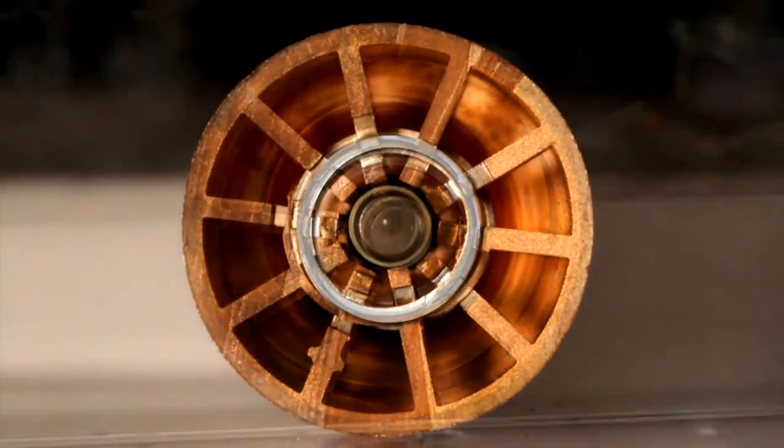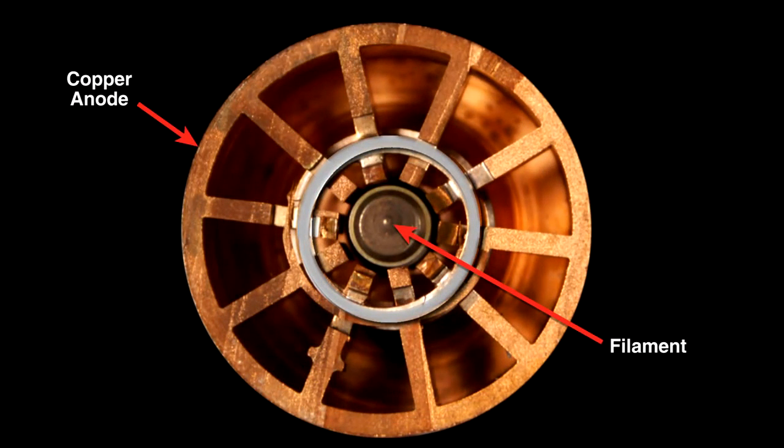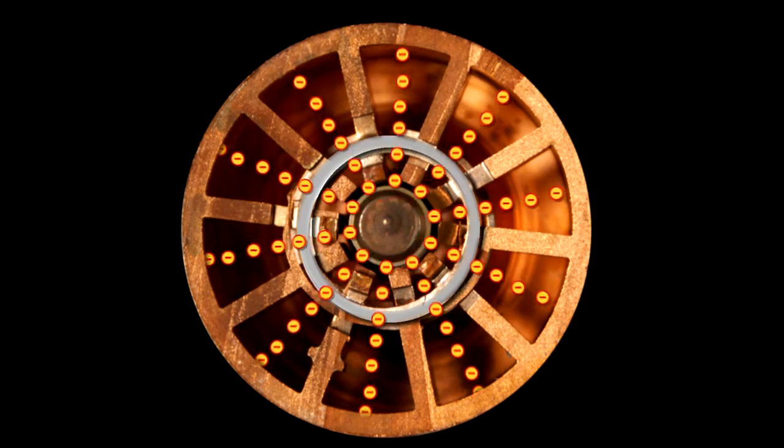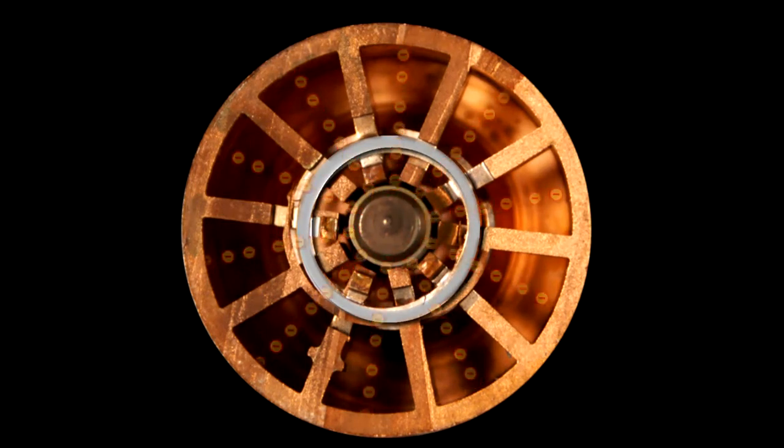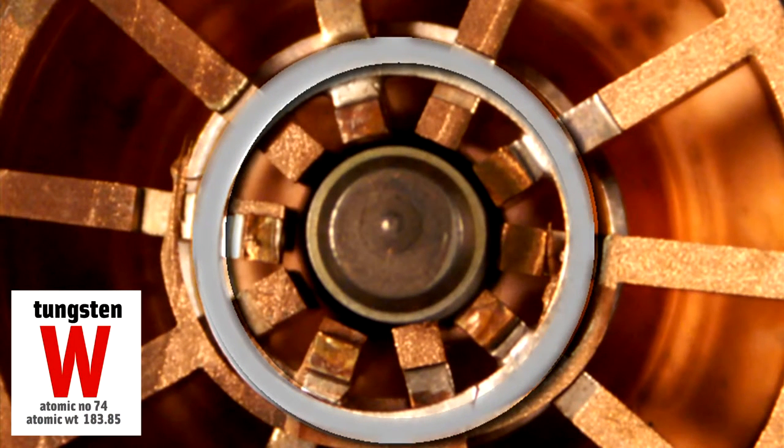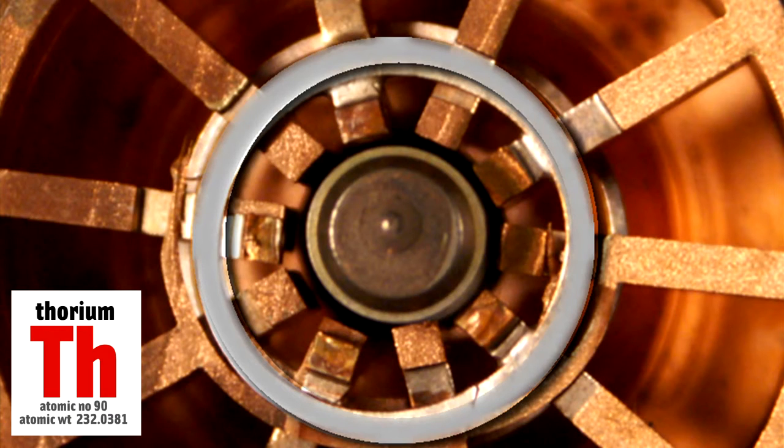You apply a large voltage across both the inner filament and the circular copper outside. This voltage boils electrons off the center filament, and they fly toward the circular copper section. The filament is made from tungsten and thorium. Tungsten because it can withstand high temperatures, and thorium because it's a good source of electrons.